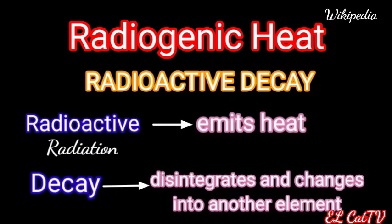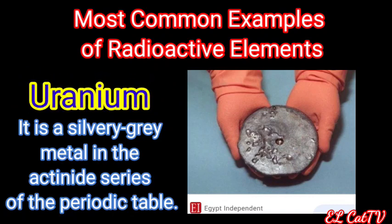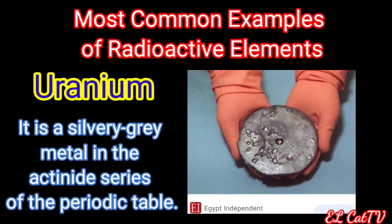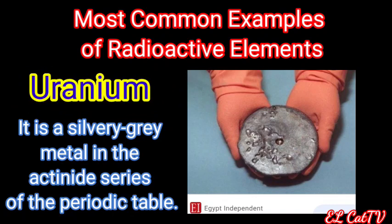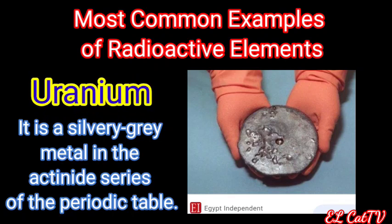Decay is actually when an element is unstable — it disintegrates and changes into another element. Here are the most common examples of radioactive elements: uranium.